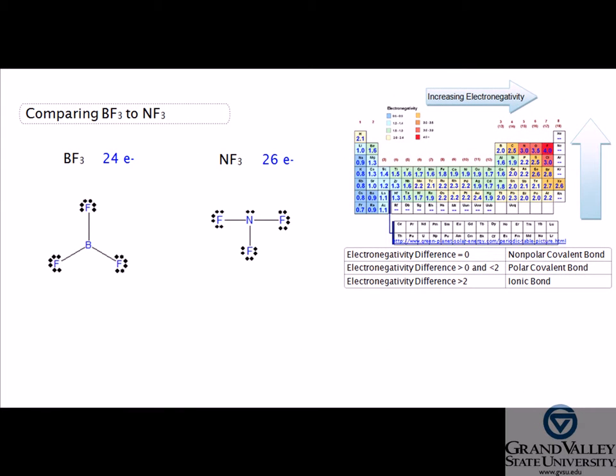To confirm the correct Lewis diagram for BF₃ and NF₃ was drawn, count the number of valence electrons and compare that value to the calculated number of valence electrons. If this value is the same, the correct diagram was drawn.